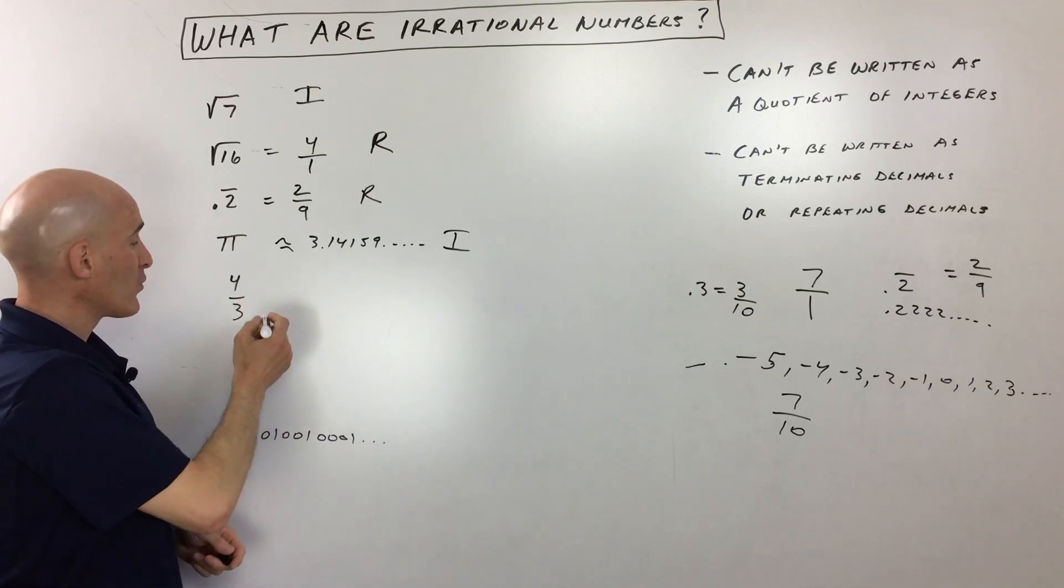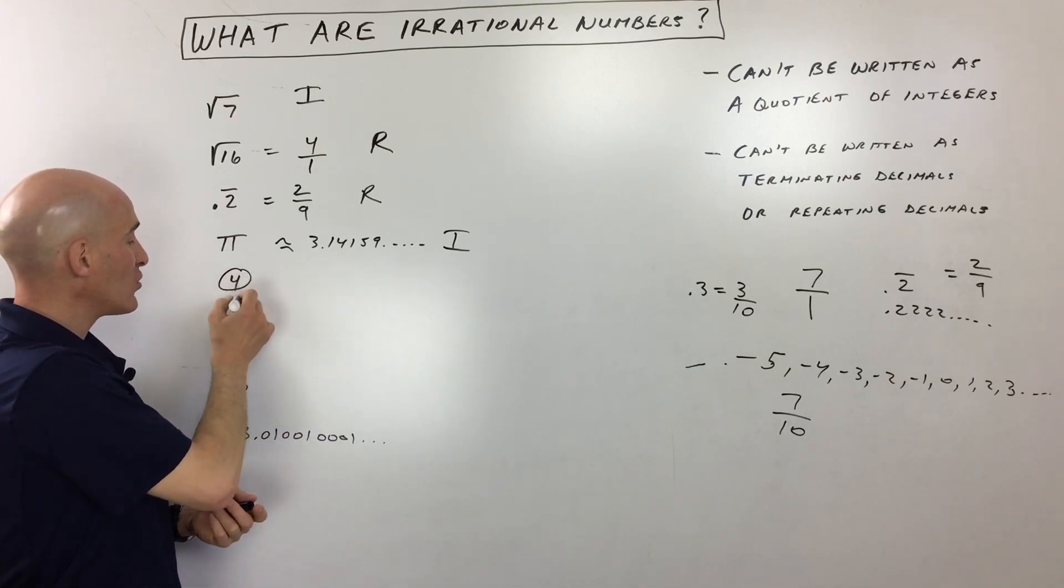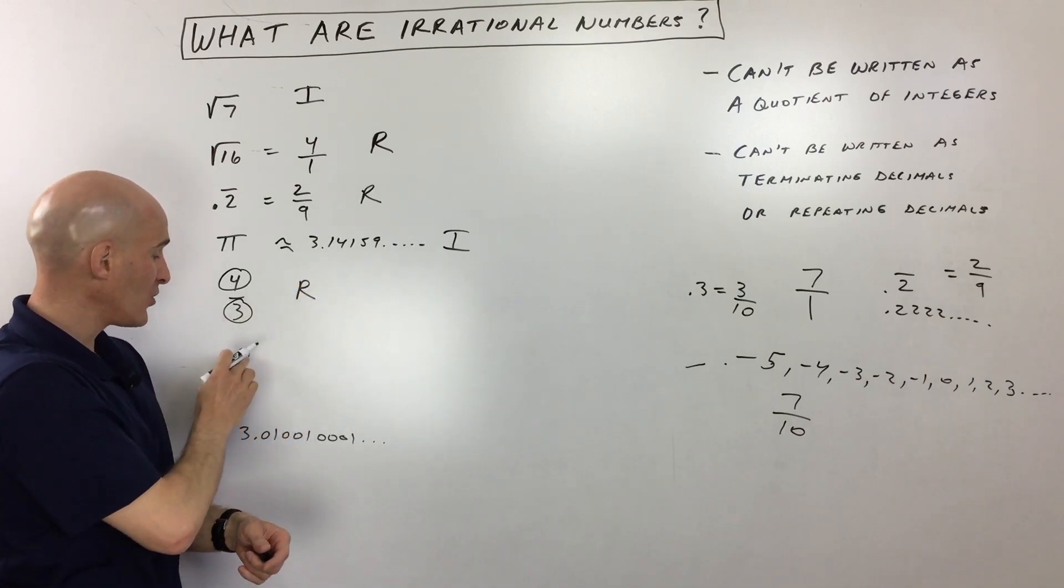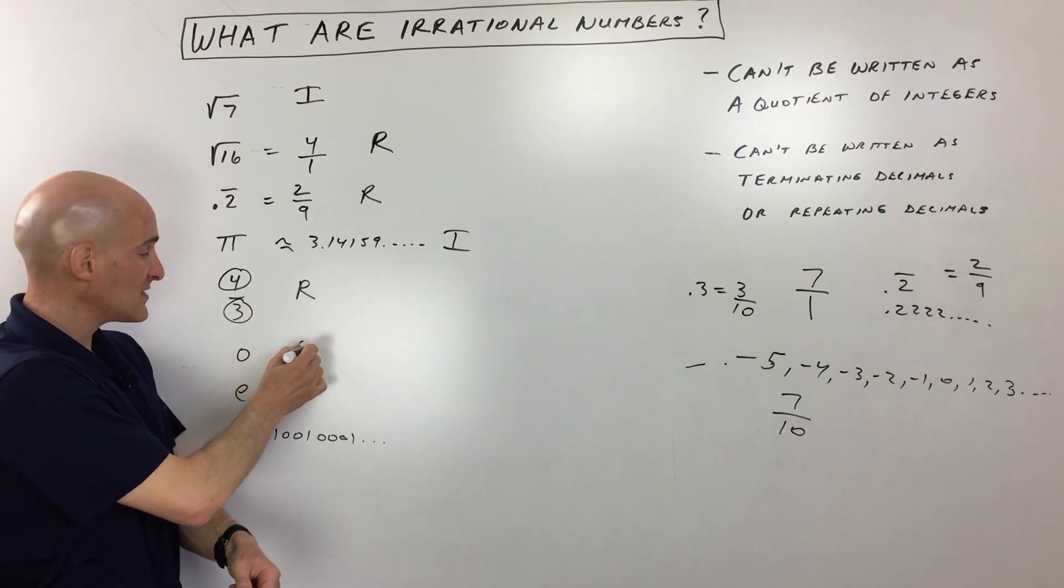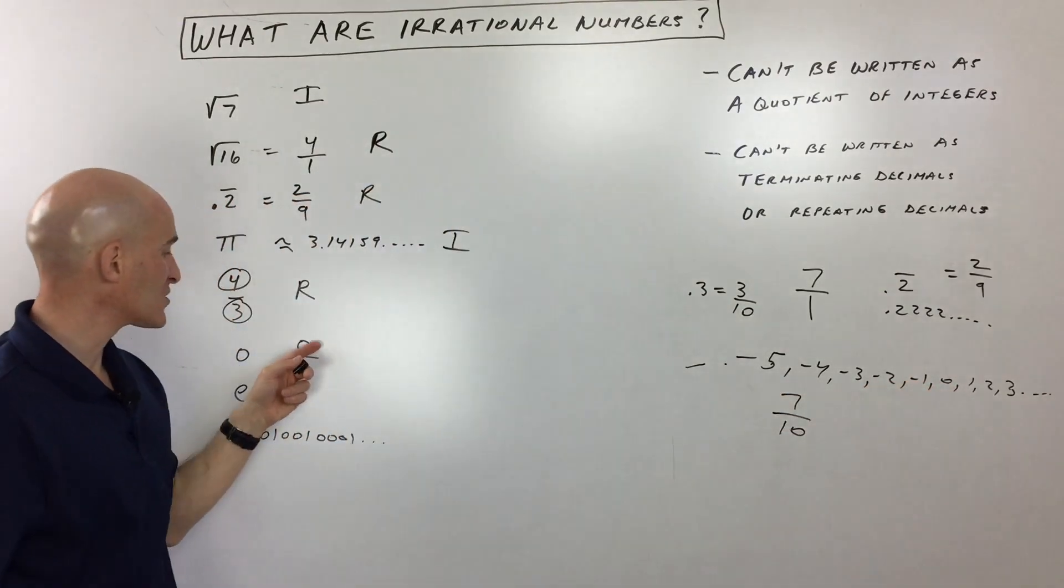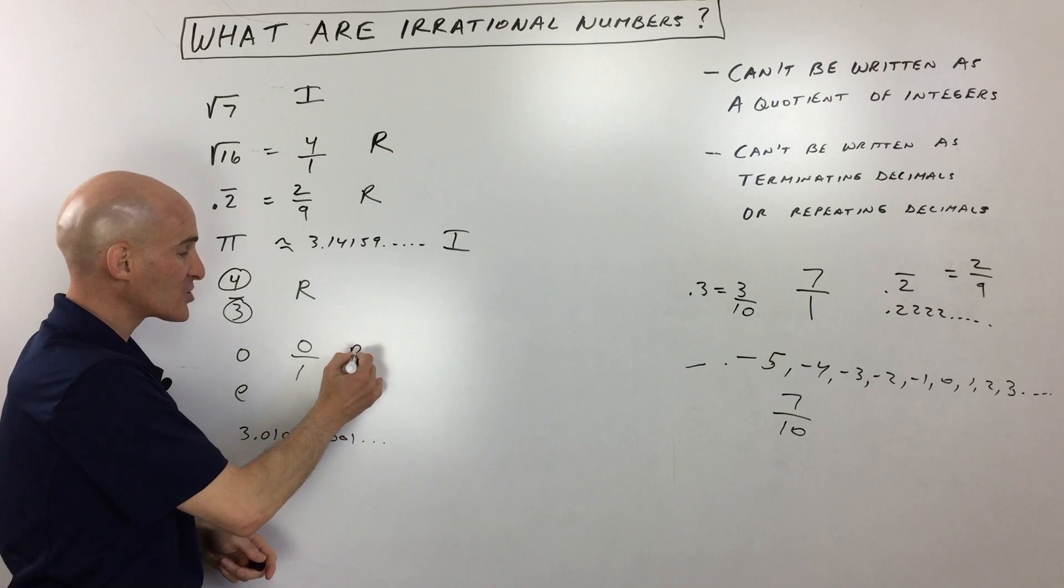Okay, 4 thirds, 4 thirds, you can see it's already a ratio of an integer divided by an integer. This is a rational number, okay, R for rational. 0 can be written as 0 divided by 1. So 0 is an integer, as we talked about over here. 1 is also an integer, so it's a ratio of integers. That's a rational number.